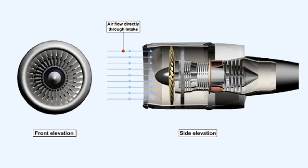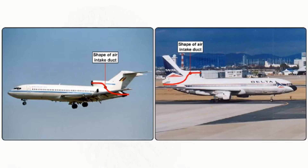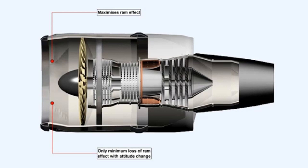The simplest form of intake is a single entrance circular cross section pitot type. The air normally flows directly through the intake when fitted to wing mounted engines, but it can form an S-shaped duct when used on engines mounted at the bottom of the aircraft fin, for example like the Boeing 727 or the Lockheed Tristar. Crosswind takeoffs can cause the airflow through this type of intake to become unstable.